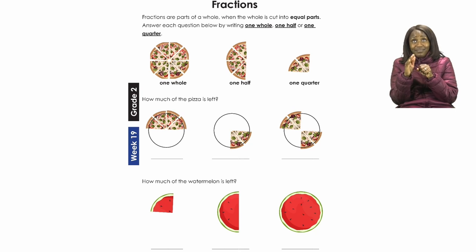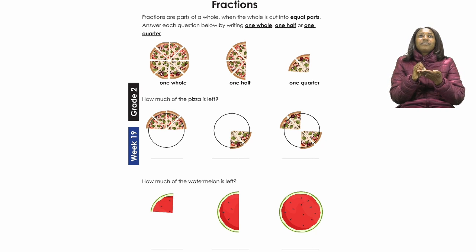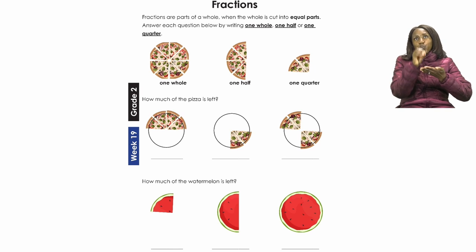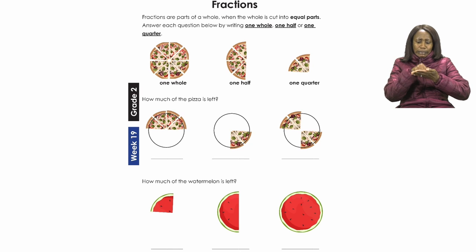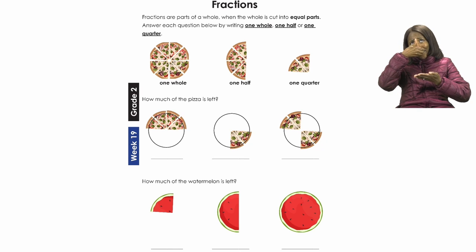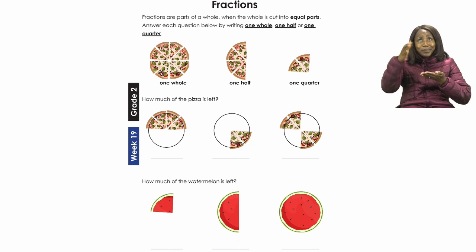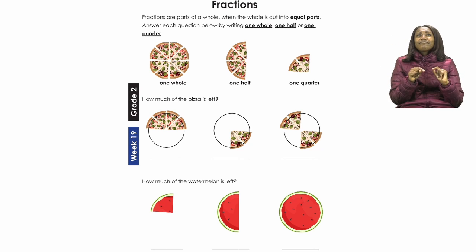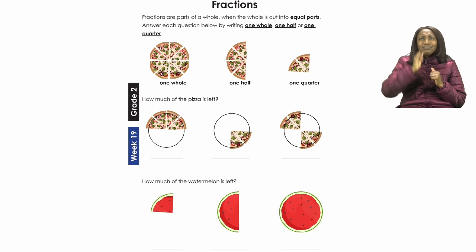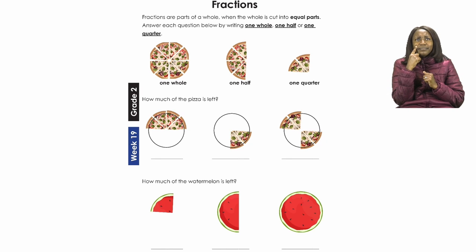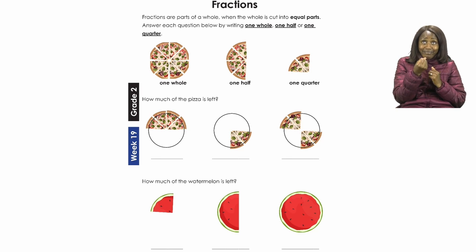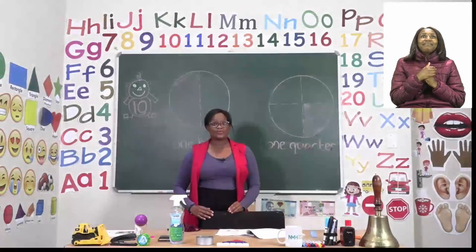Then we are shown one half, where a part of the pizza is missing — not just any part, but half of it, so what we can see is one half. Lastly, we can see that one quarter of the pizza is left. So after eating one half, then taking another quarter off, we are left with one quarter. It's now going to be our job to say how much of the pizza is left, and after that we will look at how much of the watermelon is left.